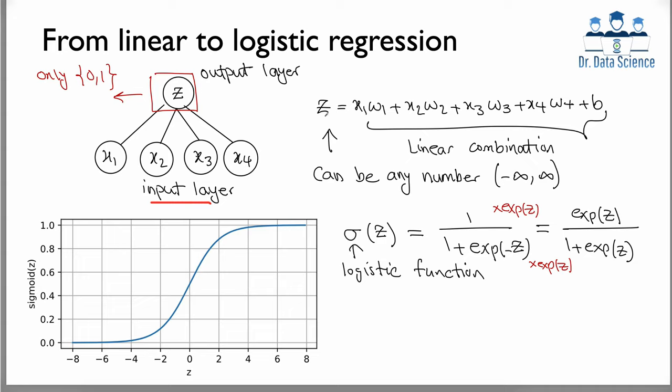Based on what we know from linear regression, we can assume the output is a linear combination of the input features, meaning we have weights or parameters w1 to w4 and a bias term b. The problem is that this output value z can be anywhere from negative infinity to positive infinity, and that's not what we want — we want to get only two labels.